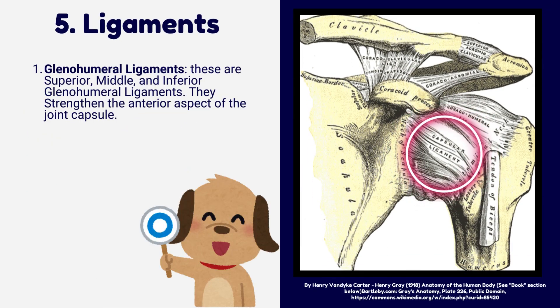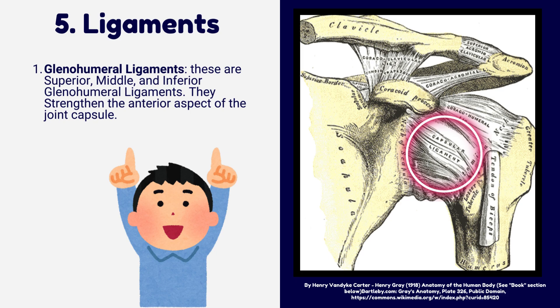The glenohumeral ligaments — superior, middle, and inferior — strengthen the anterior aspect of the joint capsule.